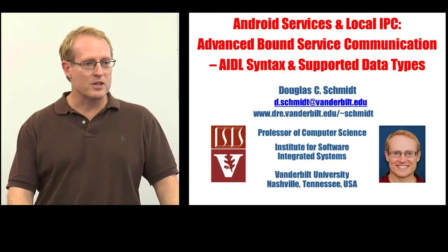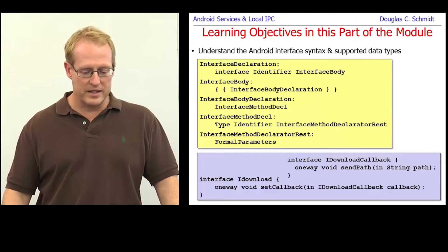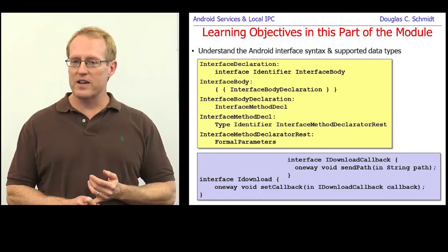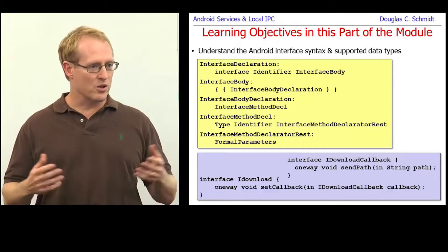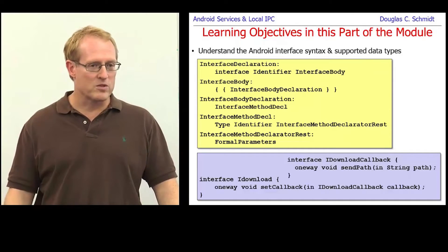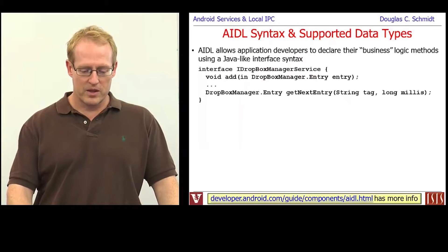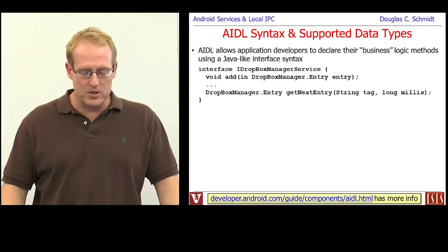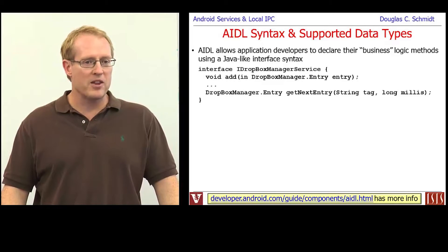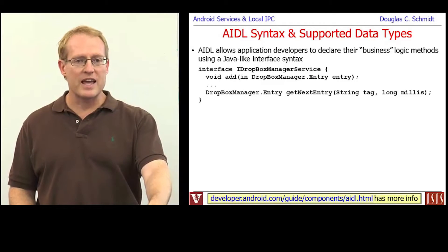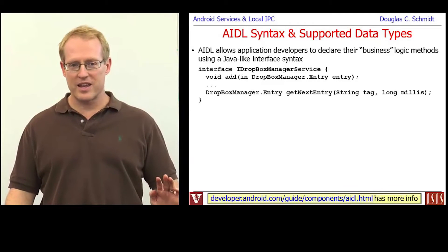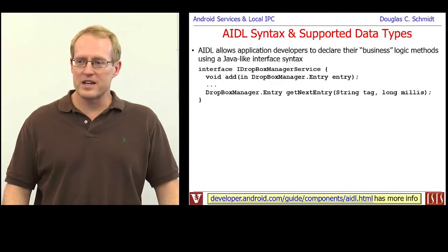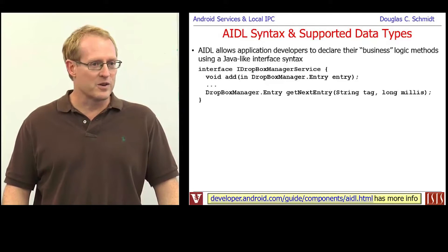So first let's start by talking about the supported data types. We're going to discuss the syntax for the Android Interface Definition Language and the way in which it supports various kinds of data types that you define in Java. AIDL allows application developers to declare their business logic methods using a Java-like syntax. The key thing here is Java-like. If you know Java interfaces, then understanding AIDL is very straightforward.